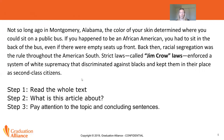I want to pay attention to the topic and concluding sentences, because those usually give me a hint at the main idea. The topic sentence says: 'Not so long ago in Montgomery, Alabama, the color of your skin determined where you could sit on a public bus' — referring to separating people based on their skin color. And the concluding sentence talks about Jim Crow laws, which separated and discriminated against people based on their skin color. So again, it's talking about discrimination and segregation.